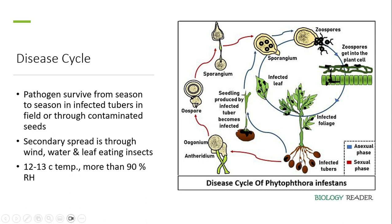There are two kinds of disease cycle: the blue lines shown here represent the asexual phase and the red lines represent the sexual phase. In the asexual phase, primary infection originates from infected potato tubers. Seedlings produced from infected tubers become infected, spreading the disease from seed.